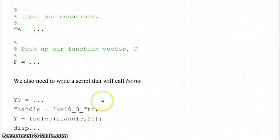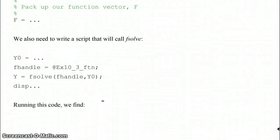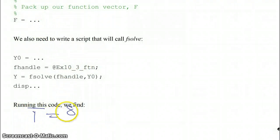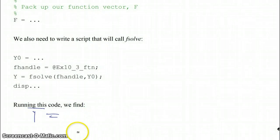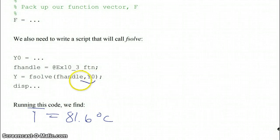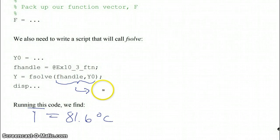When we ran the code, we found that the temperature T was equal to 81.6 degrees C. One thing to note is that fsolve has the same kind of expectation as fzero: the function handle is the first argument and your initial guess is the second argument.